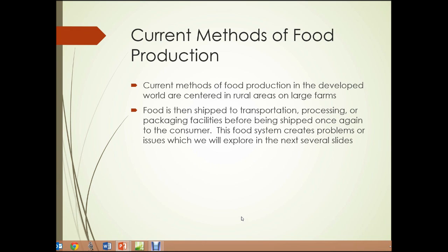First, current methods of food production. The current methods of food production in the developed world are centered in rural areas on large farms. The food produced there is then shipped to transportation, processing, or packaging facilities before being shipped once again to the consumer. This food system creates problems or issues that we'll explore in the next several slides.